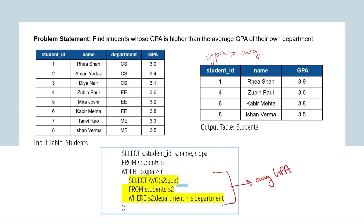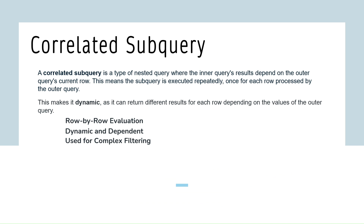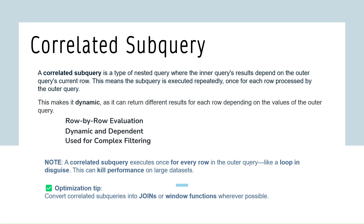This query uses row-by-row comparisons within groups and needs context from the outer row. One important note: a correlated subquery executes once for every row in the outer query, like running a loop, which can hurt performance on large datasets. An optimization tip: convert correlated queries into joins or window functions wherever possible.